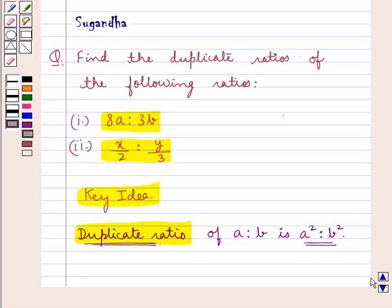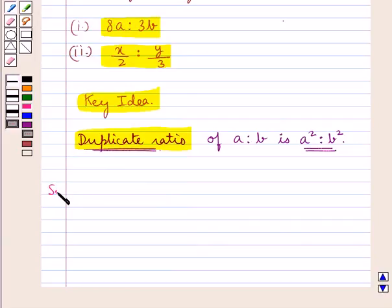So, let's proceed with the solution now. In the first part, we are given the ratio 8a is to 3b. We need to find the duplicate ratio of this ratio.